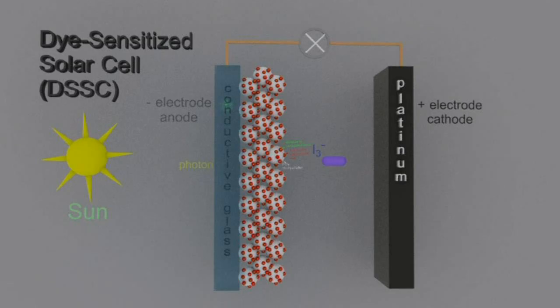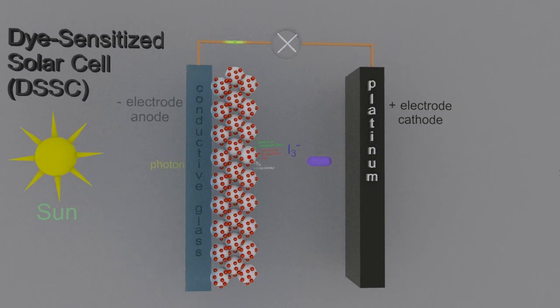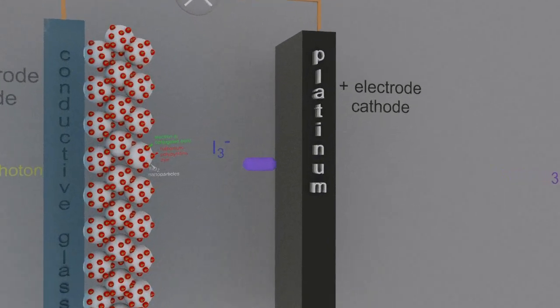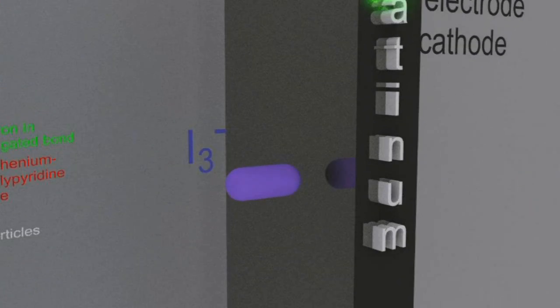The electron travels into the conductive glass negative electrode. The negative electrode is giving off electrons and that's why it's negative.